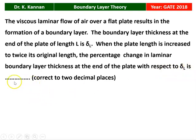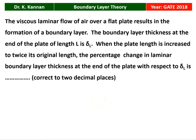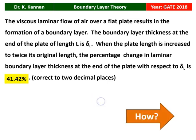The answer should be correct to two decimal places. The situation is: the boundary layer thickness is delta L, and the length of the plate is doubled. When you double the length of the plate, what is the percentage increase in the boundary layer thickness? The answer is 41.42 percent, and we will see how in the next slide.